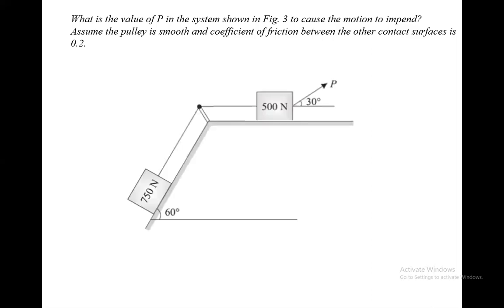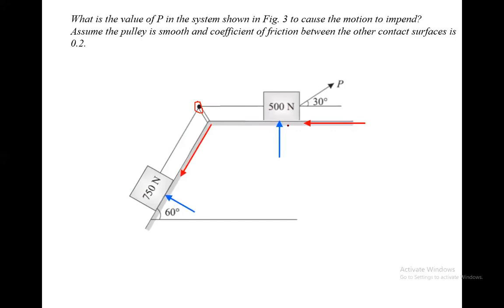Now let us take another problem. What is the value of P in the system to cause motion to impend? Assume the pulley is smooth and the coefficient of friction between other contact surfaces is 0.2. There is a fixed pulley and a force P applied at an angle of 30 degrees. When you pull, the 750 Newton block slides up and the 500 Newton block slides towards the right.